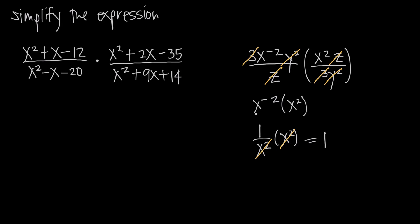Another way you could have done it: instead of changing x to the negative 2 into 1 over x squared, you could have used the exponent rule that x to the a times x to the b equals x to the a plus b, and said this is x to the negative 2 plus positive 2, which gives you x to the 0. And x to the 0 is 1 — anything raised to the 0 power is 1. So you could have done it that way as well.